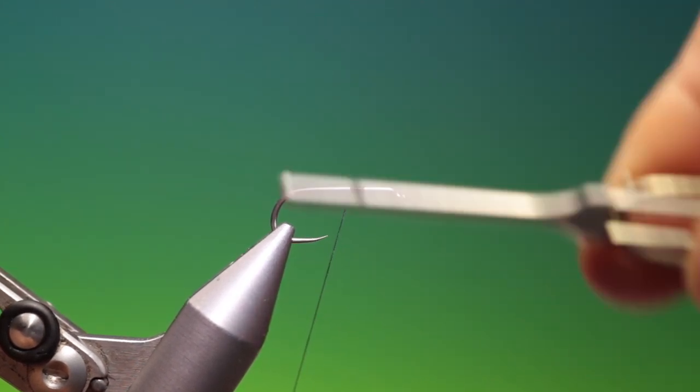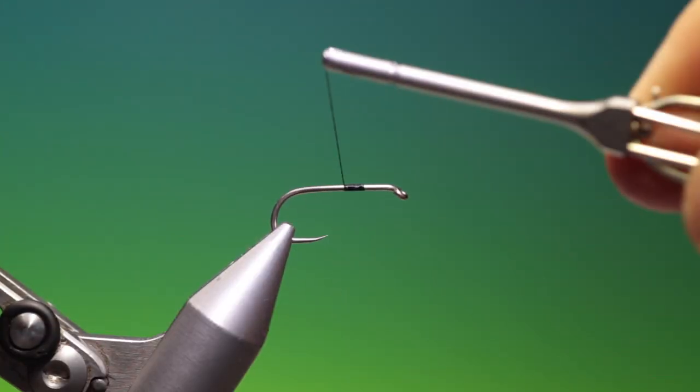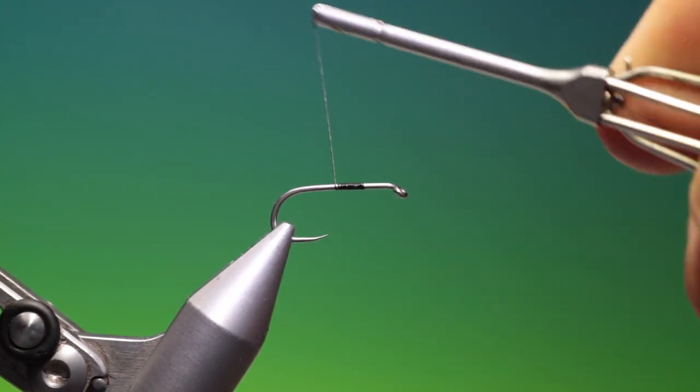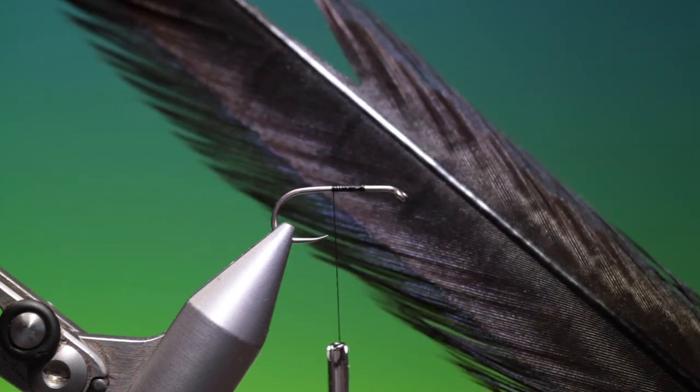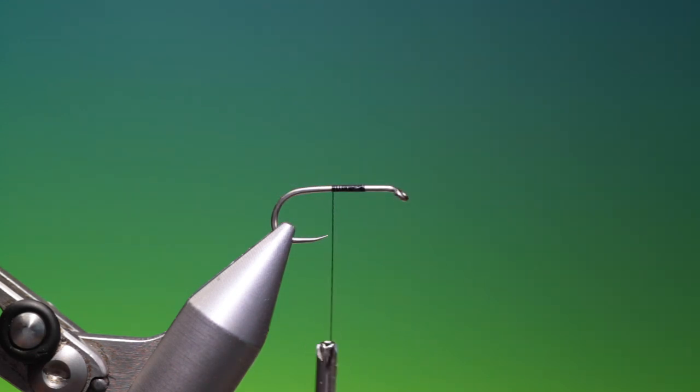We'll just attach tying thread there, get rid of that. I want to go back just to about there and we need some black dyed pheasant tail. This is the pheasant tail black.